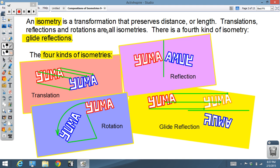First of all, an isometry is a transformation that preserves distance or length. Again, translations, reflections, rotations, they're all isometries, and there is a fourth kind called a glide reflection. And here are pictures of each of them. We already have been through translations. We know how that works. Reflections, rotations, and then a glide reflection is a combination of a translation followed by a reflection over a line that's parallel to the direction of the translation. And we'll again show you that a little bit later. Four kinds of isometries.